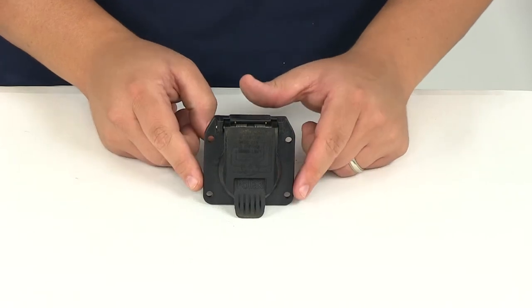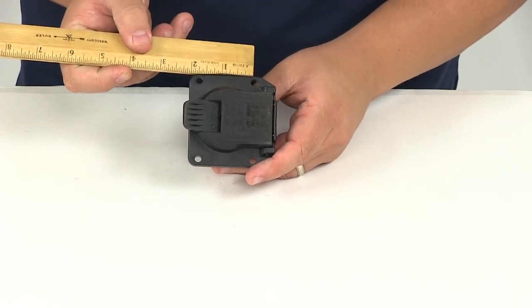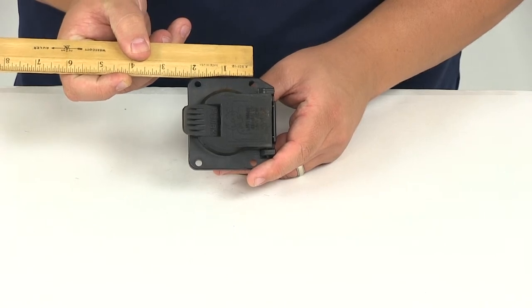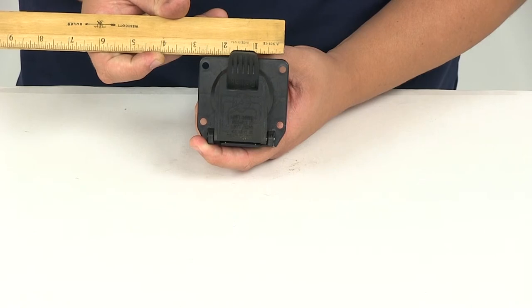You can see here that it has four mounting holes. The distance from center to center going this way measures one and three quarters of an inch. Center to center going this way measures two and a half inches.